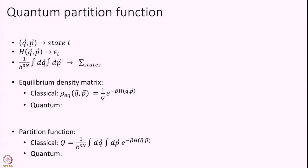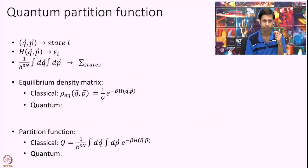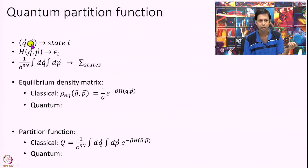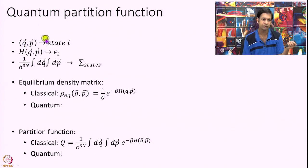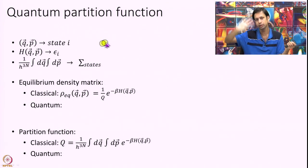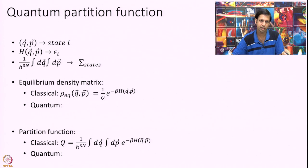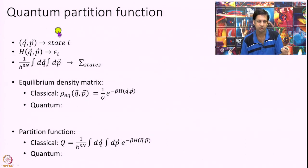Now we will move on to how to define the quantum partition function. In quantum mechanics there is no such thing as phase space — the notion of q and p that we have been using disappears. What we have instead is wave functions, and we denote a wave function by some state i. The key point is that q and p are completely continuous, but these quantum states are discretized — they are quantized, which is the origin of the word 'quantum'. So q and p gets replaced with state i.